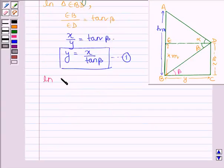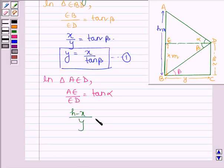Now, let us see in triangle AED. Here we have AE divided by ED is equal to tan alpha which further implies that H minus x divided by y is equal to tan alpha.